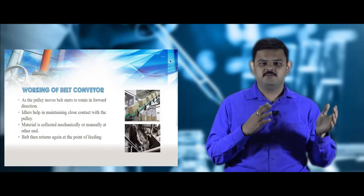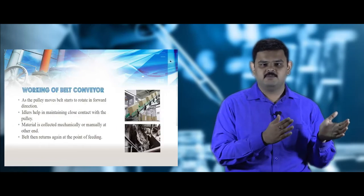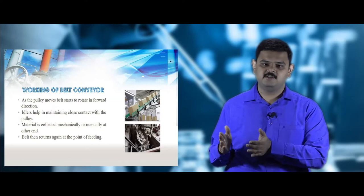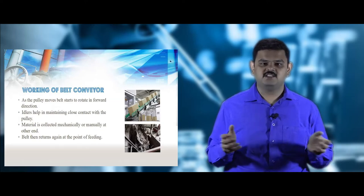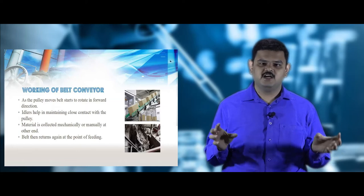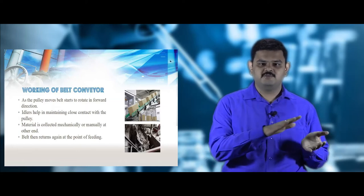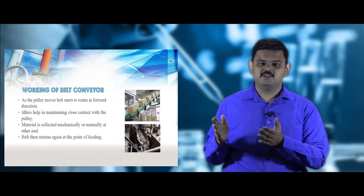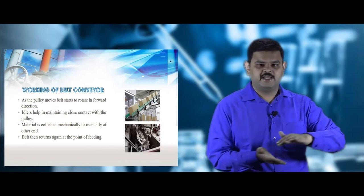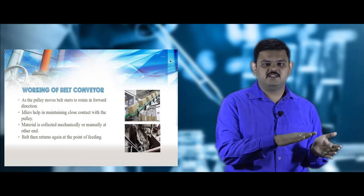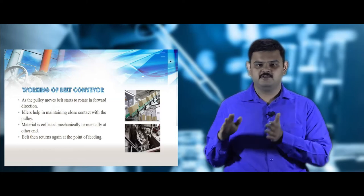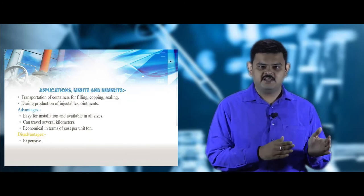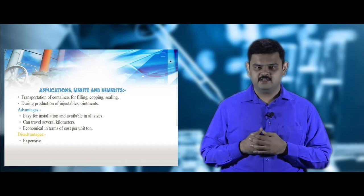In the working principle of the belt conveyor, the feed hopper feeds material onto the belt surface at one end. The mechanized motor pulleys, driven by a motor, move the feed forward from the feed point to the discharge point. The pulleys then rotate the belt backwards again to the feed point. That is how feed materials are transferred from one end to the other with the help of pulleys, tighteners, and idlers.